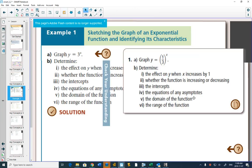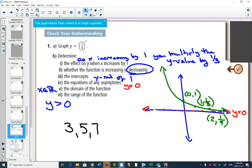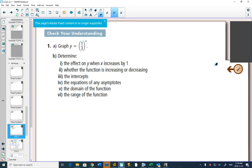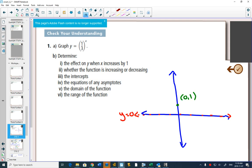So here's our first example. We want to graph 1 third to the x. So off to the side, we can start our graph. It's an exponential graph, so you can automatically put in your asymptote at y equals 0. It's an exponential graph, so you can automatically label the point 0 comma 1.